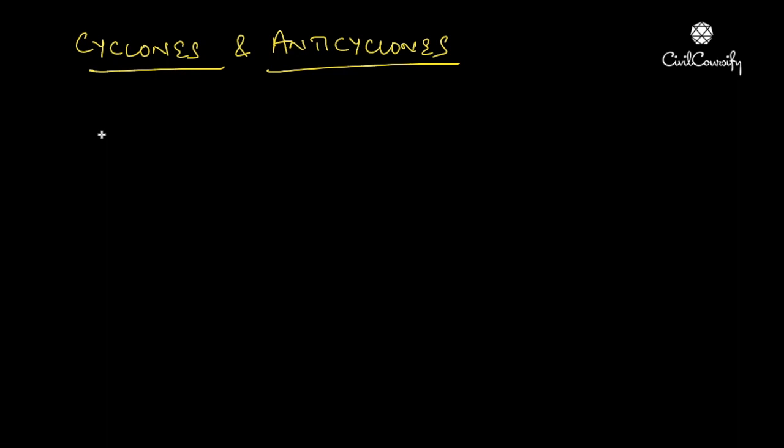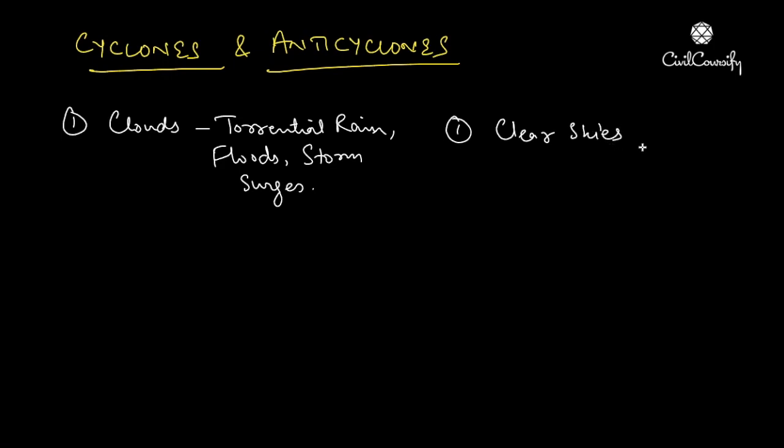We've seen the features of cyclones and anticyclones and their differences. Let's note down these points once. First, in the case of cyclones we saw that it leads to formation of clouds which is a feature of torrential rain, floods and storm surges. Similarly in the case of anticyclones we see clear skies - no cloud formation occurs here. We saw that in the cyclone case there's a low pressure region at the center, whereas in anticyclones we see a high pressure region at the center.